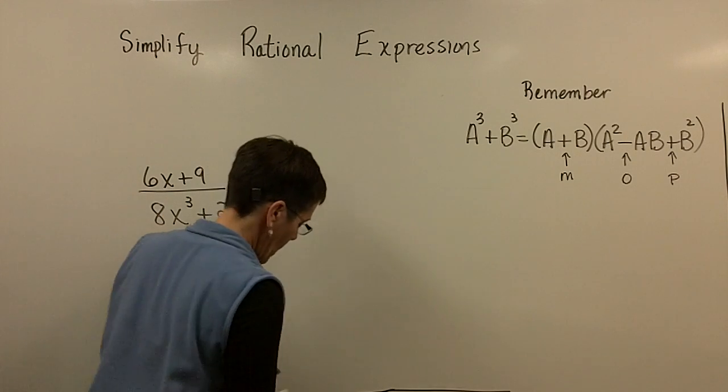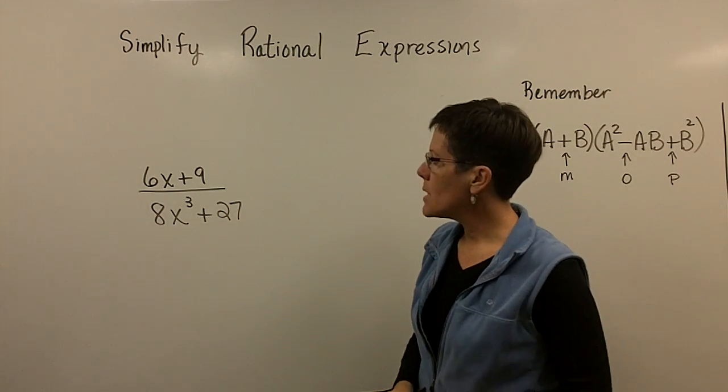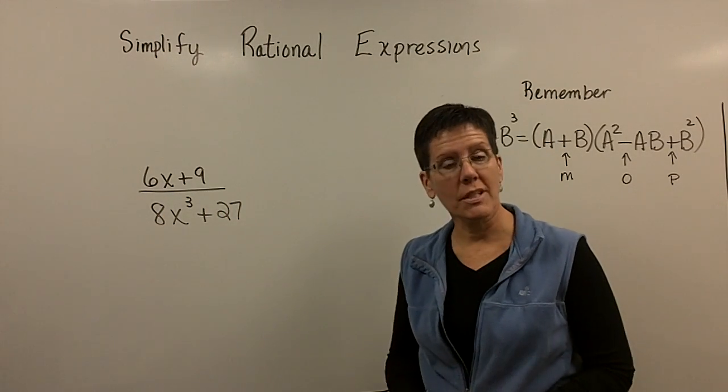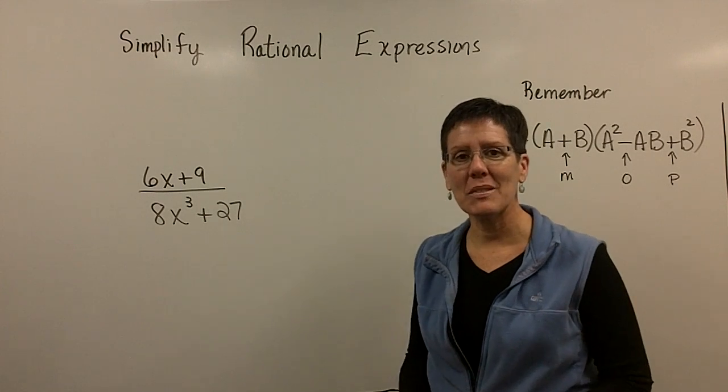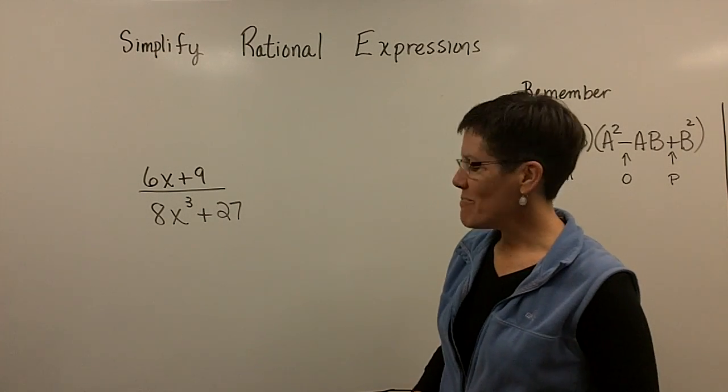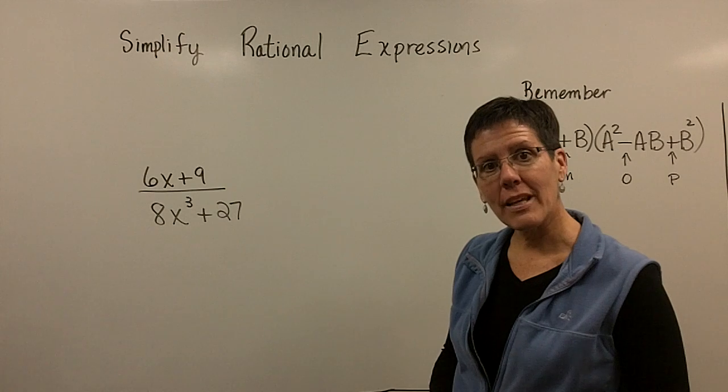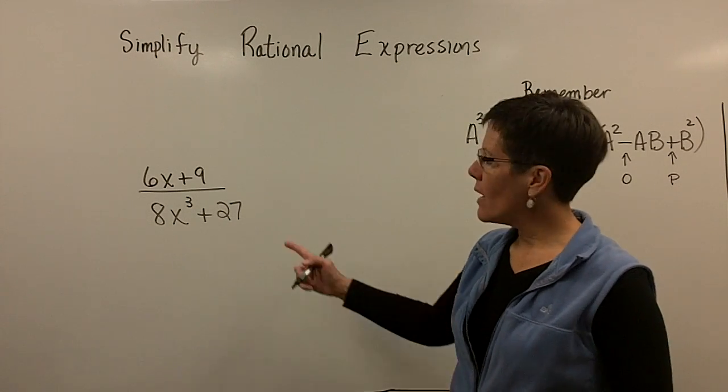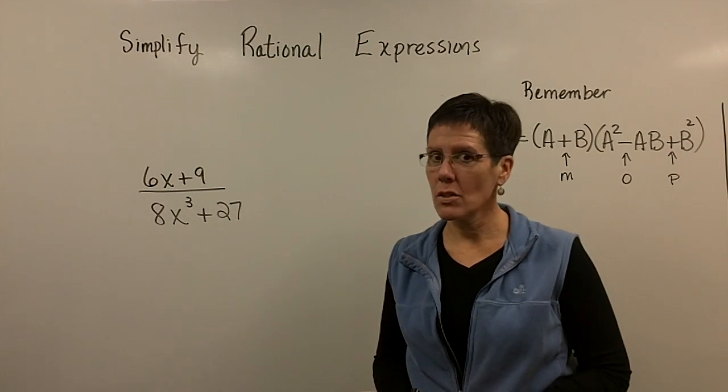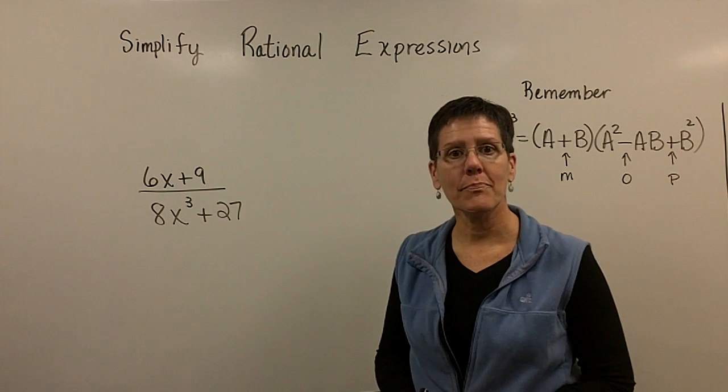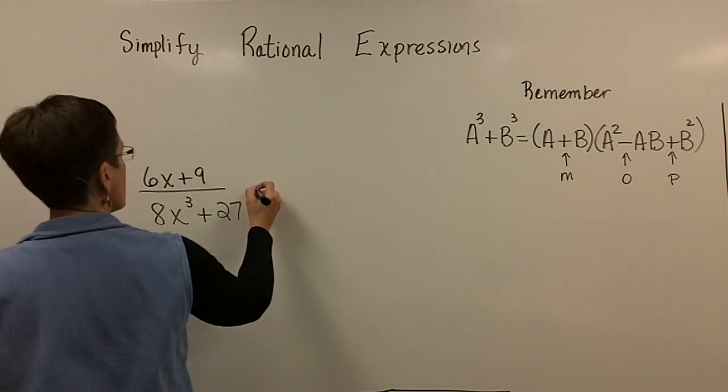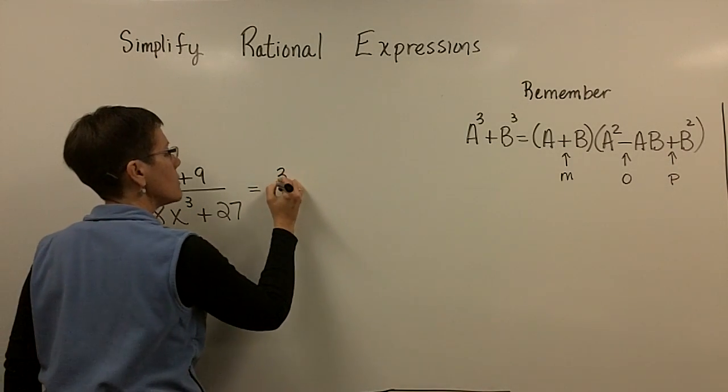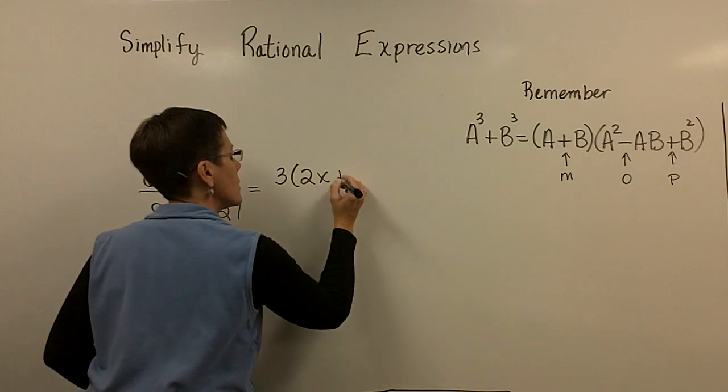And it happens that in this problem, I happen to have a sum of cubes. Again, I probably should have made that a difference of cubes and wasn't thinking there. But let's go ahead and factor the numerator and factor the denominator. The numerator in this problem just has a greatest common factor in it of a three. So let's get the three out of there. So we'll have three times the 2x plus three.